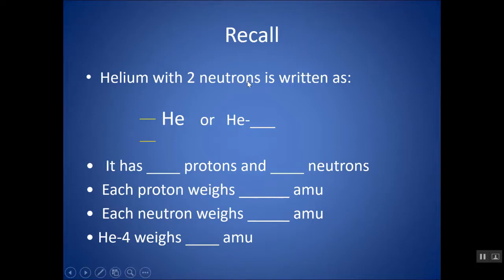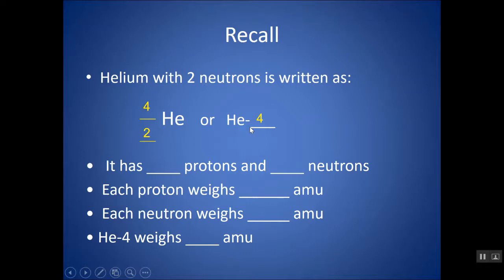Helium with two neutrons: we don't put the neutrons themselves in the symbol, but the mass number — the top number — would be 4. Each neutron weighs 1 amu and each proton weighs 1 amu. Helium has two protons, so it has a mass number of 4. We can write that as a top-left number or after a dash, as He-4. It has two protons and two neutrons, each weighing 1 amu, so helium-4 weighs 4 amu — that's why it's called the mass number.